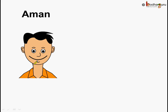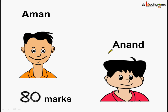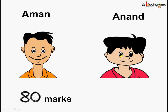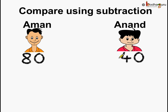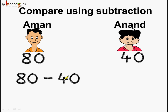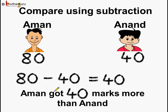Aman scored 80 marks in math, and Anand scored 40 marks in math. Now if we compare their performance using subtraction, then 80 minus 40 is equal to 40. So we can say Aman got 40 more marks than Anand.